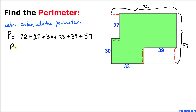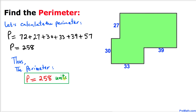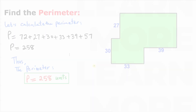Adding these numbers, our perimeter turns out to be 258 units. So the perimeter of this given shape is 258 units — and that's our final answer. Thanks for watching, and please don't forget to subscribe to my channel for more exciting videos!